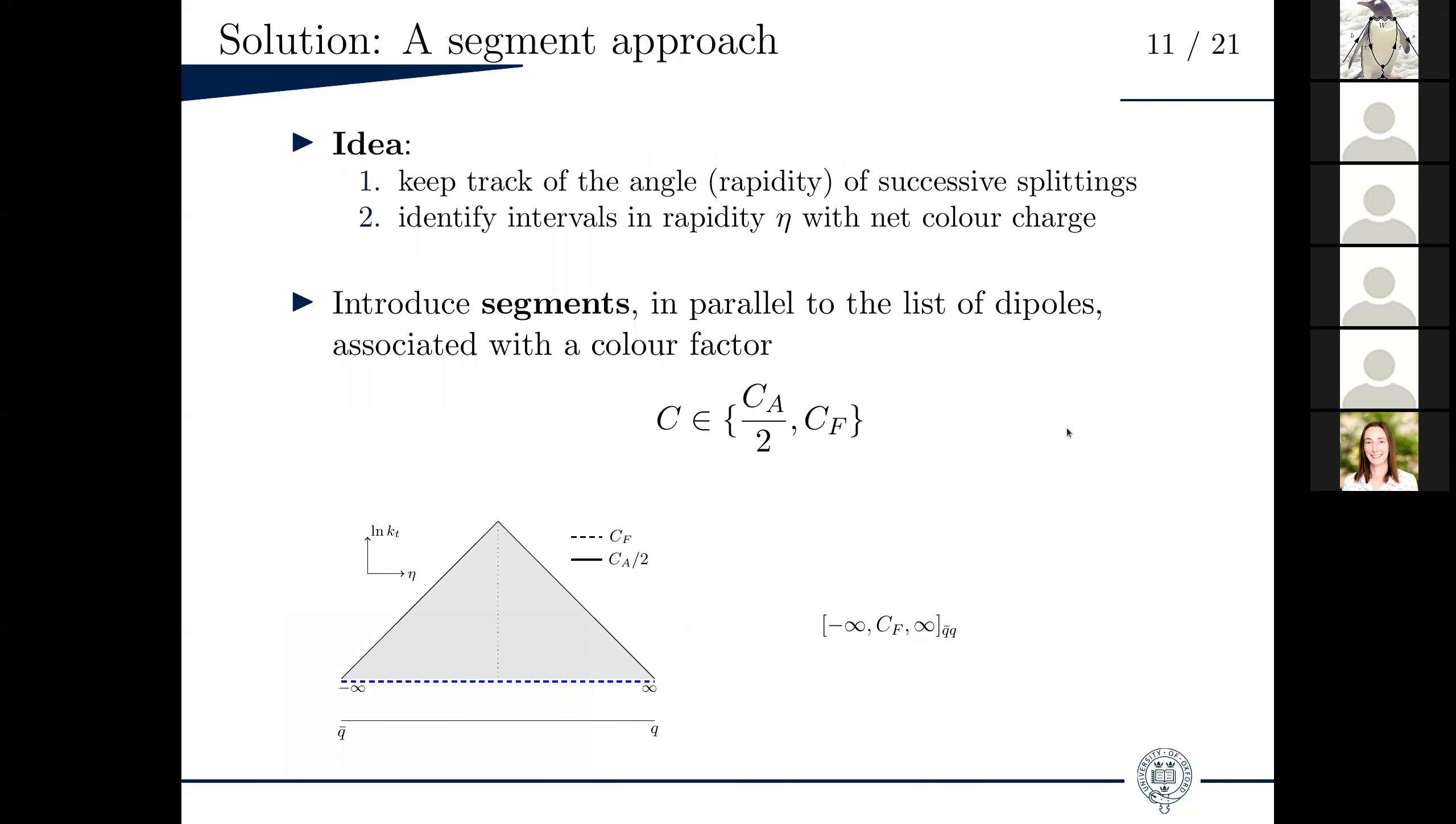So our algorithm, one of the solutions that we implemented is quite simple. As we learned from angular ordering, the only thing you need to keep track of as the shower evolves are the angles or equivalently rapidities of successive branchings in the chain. So on top of the list of dipoles and their four-momenta, four-momentum of their constituents, at each point of the shower, we also keep track of a list of what we call segments, which is this guy here. Each segment is a succession of intervals in rapidity. Each of these intervals is associated with either a CF or a CA factor. I'll go quite quickly over it because it's relatively easy to understand without going into details. If you start from a Q-bar Q dipole, you initialize a segment that is associated with the dipole, which is just a full interval in rapidity from minus infinity to infinity. It's just one overall CF factor everywhere.